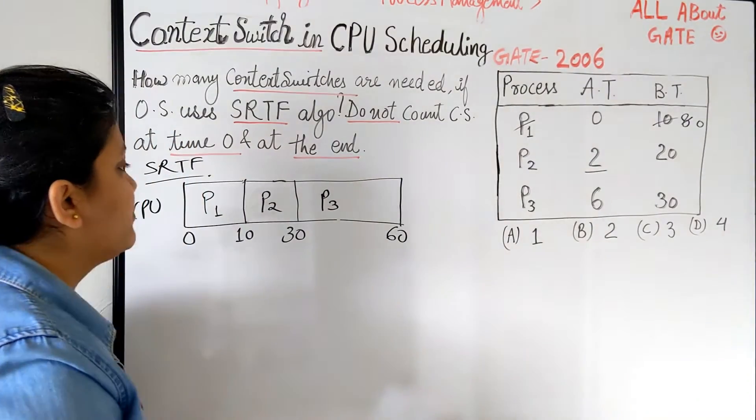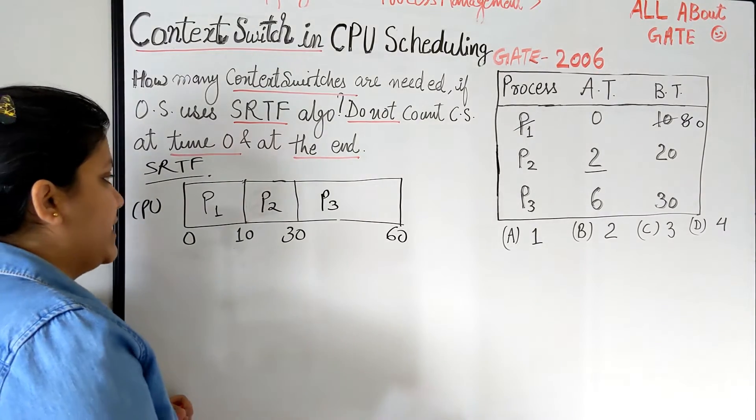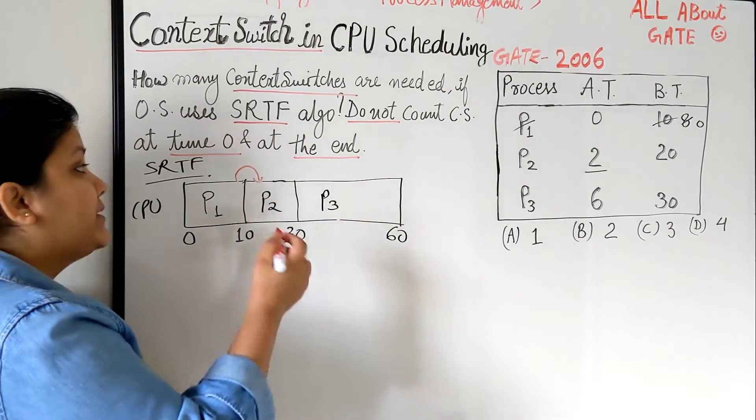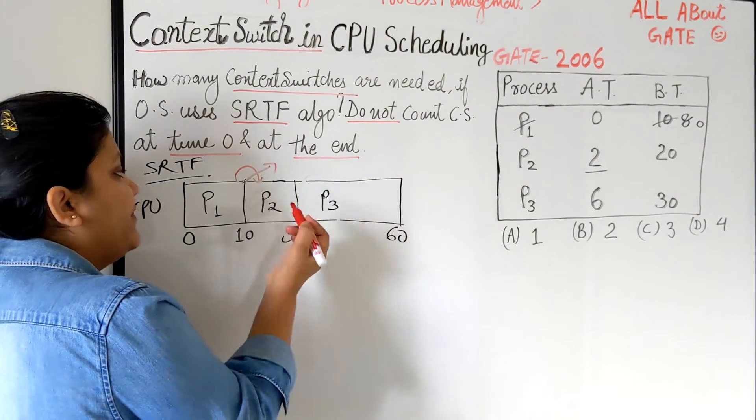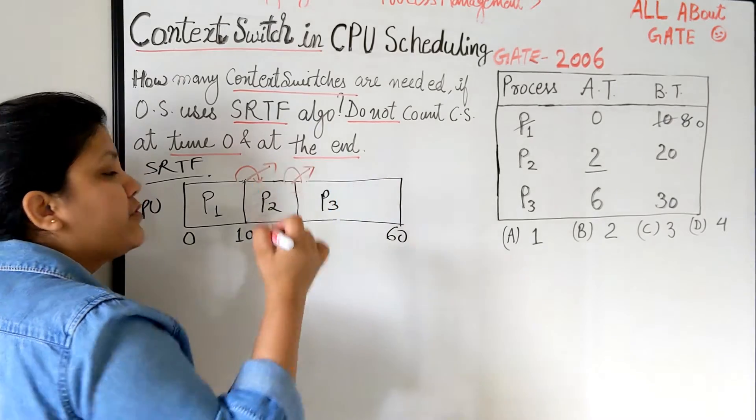Now everyone just focus here. It is quite simple. Now anyone can say how many context switches. So here when you are going from P1 to P2, this is a context switch. When you are going from P2 to P3, this is a context switch.